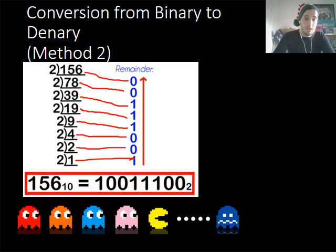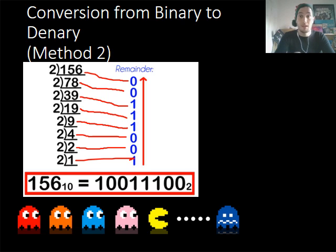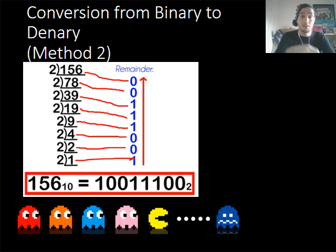What you do is start at the bottom and write that number out: 1, 0, 0, 1, 1, 1, 0, 0. I will do a written video of this method another time so you can see how that works. But that is how you convert from denary to binary using the division method.